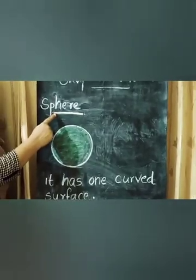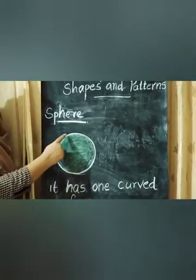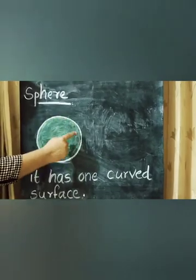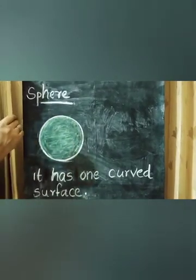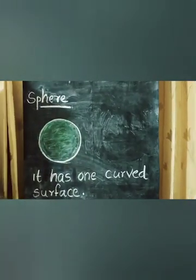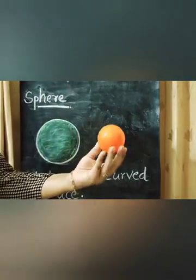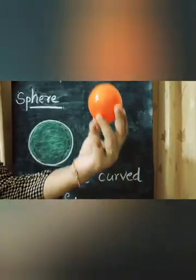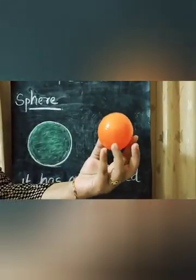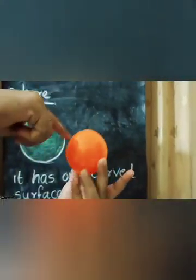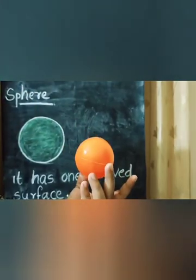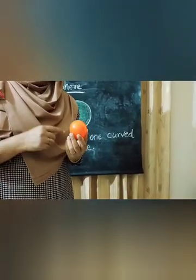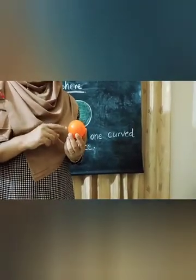Next, Sphere. A Sphere has 1 curved surface. It is a Sphere — it has 1 curved surface. A Globe is another example of a Sphere.